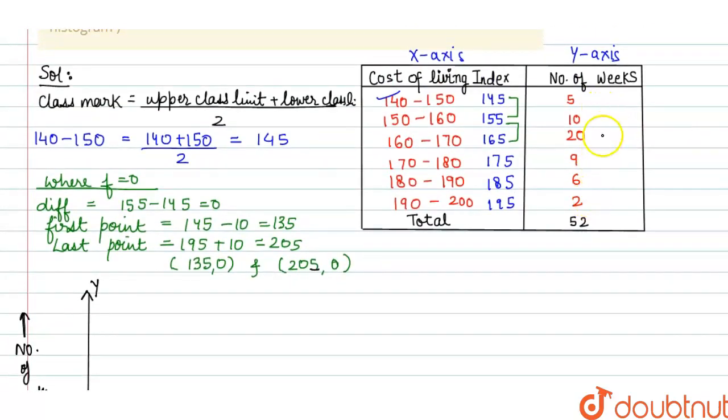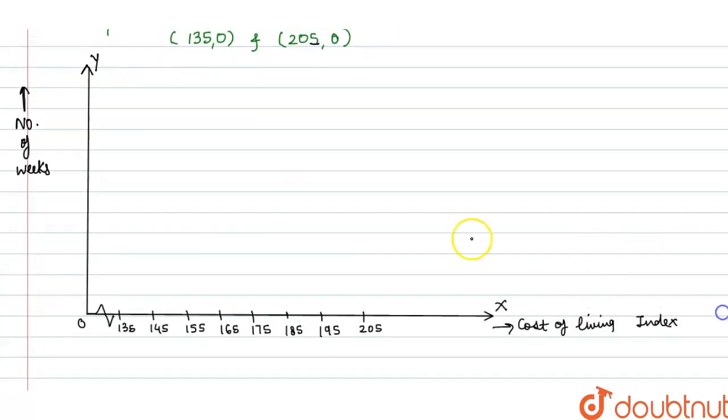For number of weeks, the lowest is 2 and highest is 20. Taking the difference of 2, it means 2, 4, 6, 8, 10, 12, 14, 16, 18, 20. It's sufficient up to 20.